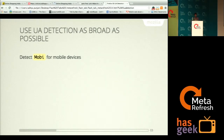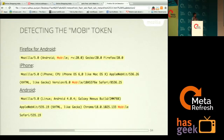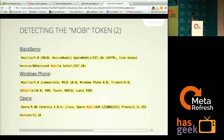If you are still using UA detection, use the term 'Mobi' for detecting mobile devices. This is the Mobi token for detecting mobile devices — Firefox, iPhone, Android — they all have the common word 'Mobi'. BlackBerry also has Mobi, Windows also has Mobi, and Opera also has Mobi. So we can use Mobi for detecting mobile devices.